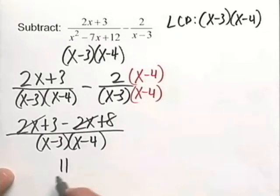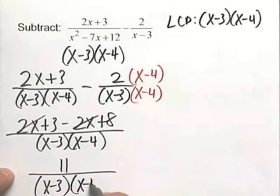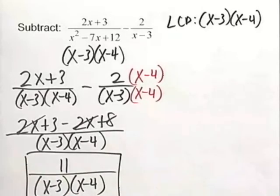the 2x's cancel out and we obtain 11 all over x minus 3 times x minus 4. And this ends our subtraction problem.